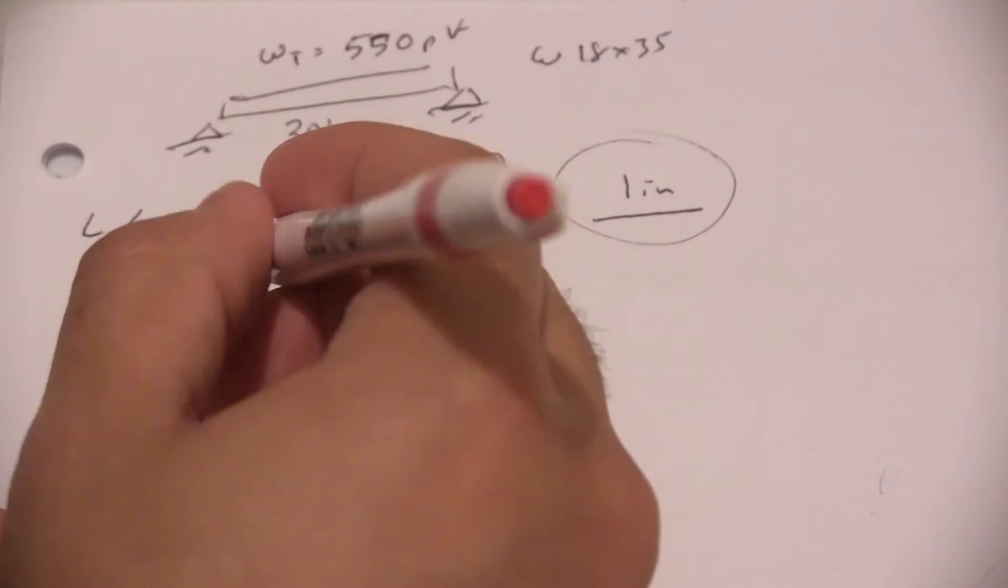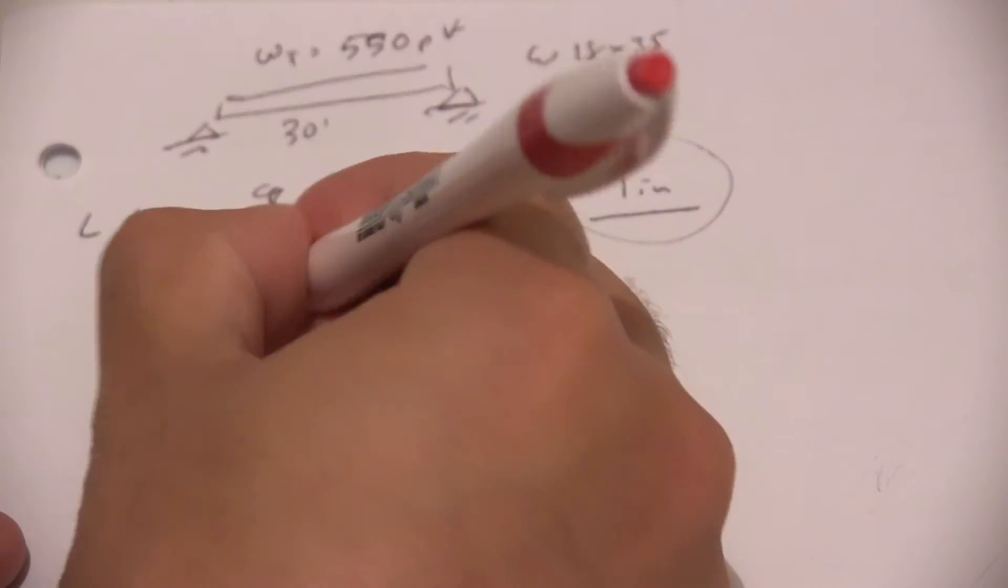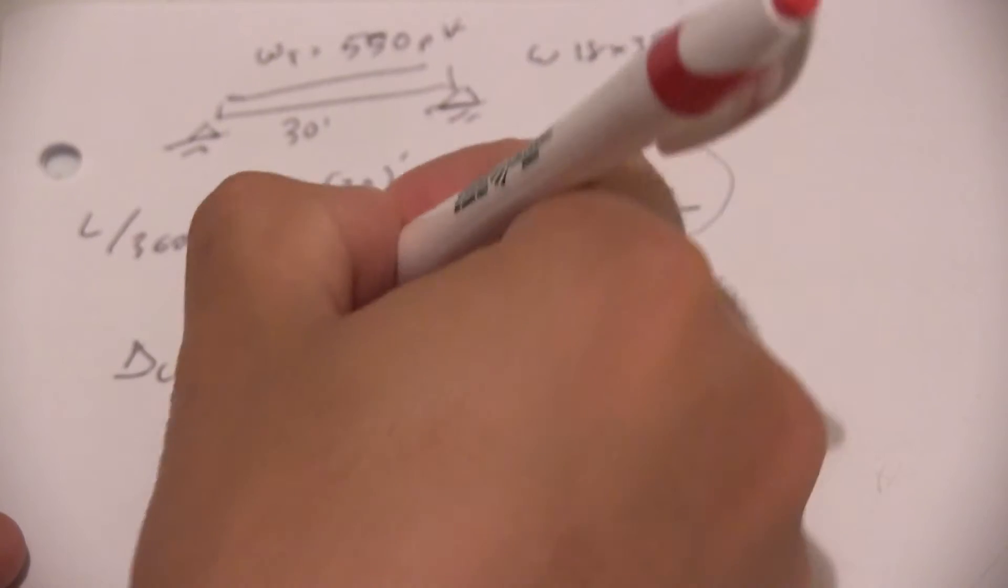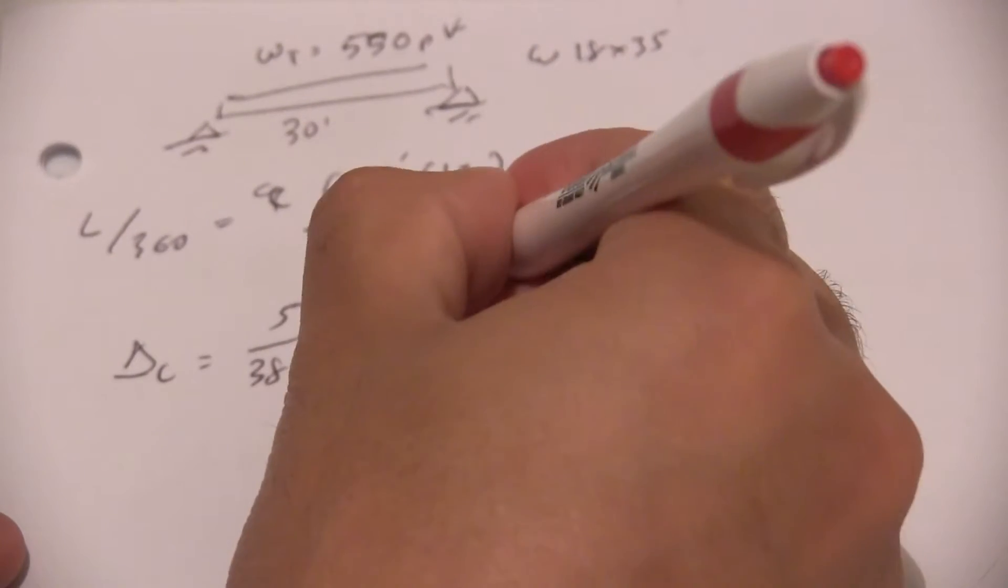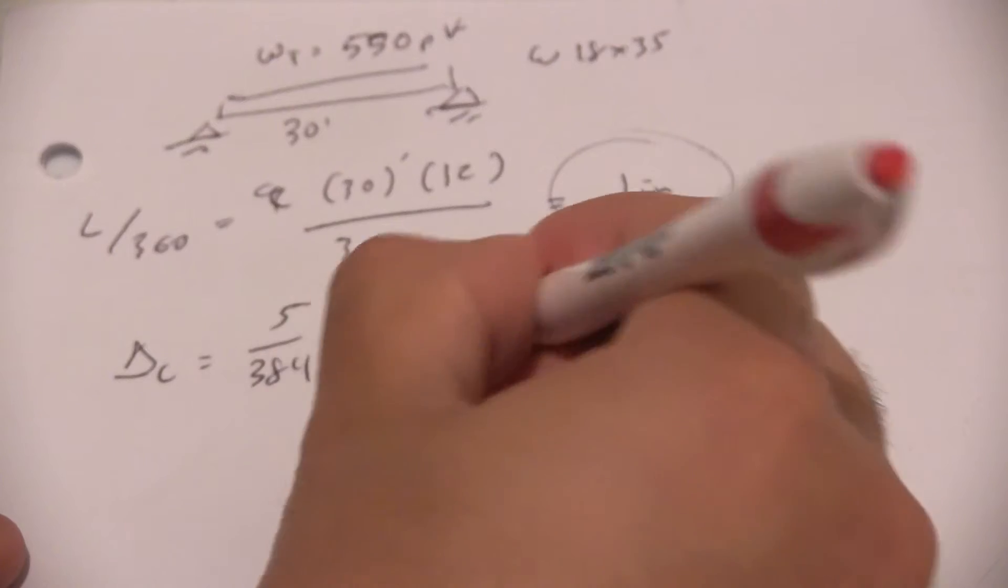So now let's go into the next step. We're going to use the deflection formula: 5 over 384 times WL to the 4th over EI.